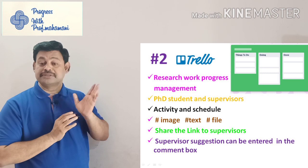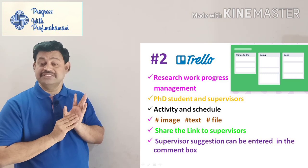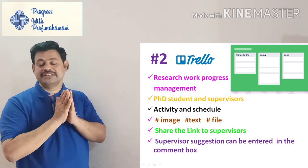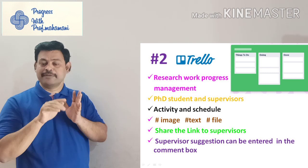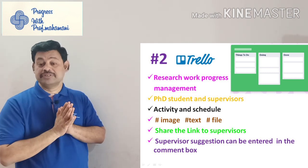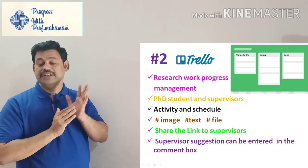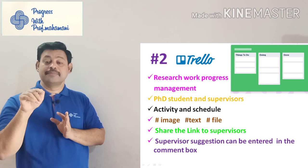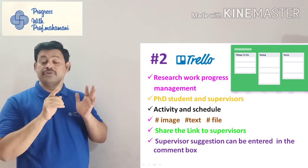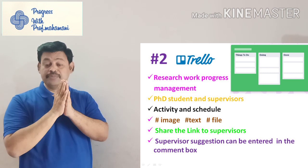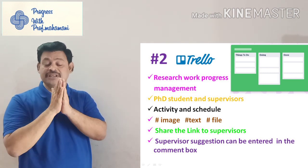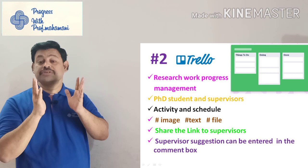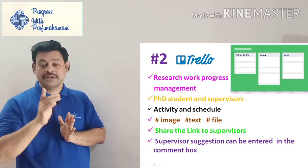One more option in Trello is you can share images, text, and files. Once work is complete, you add your supervisor's email and they immediately get an update. If the supervisor wants to give a suggestion, there is a comment box where they can type and communicate. The complete student-supervisor engagement can happen if you use this software properly. It is very good for collaborating with your guide and research team.